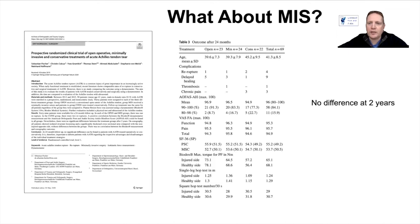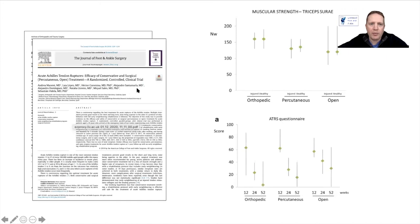There have been arguments that minimally invasive surgery makes a difference. A randomized controlled trial comparing conservative, minimally invasive, and open surgery found no difference at two years across all groups. A further randomized controlled trial comparing conservative, percutaneous, and open approaches showed that muscular strength was actually better in the orthopaedic group, and in the ATRS questionnaire at one year there was a trend toward improvement with those treated conservatively compared to percutaneous or open.